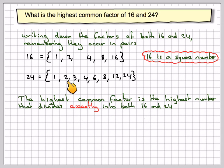So we look at this list here. What is the highest number that occurs in both lists? We can see that that is 8. Therefore, the HCF, the highest common factor, is equal to 8.